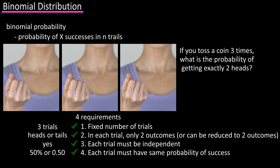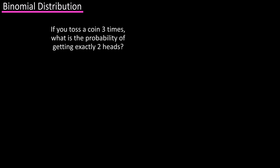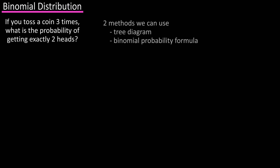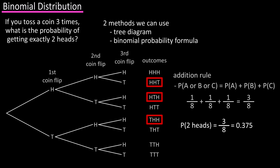There is a 50% probability of getting a head on each trial. There are two main ways to find the probability of our question. The first is to use a tree diagram and the addition rule, as you see here, and the probability equals 3 over 8, or 0.375.